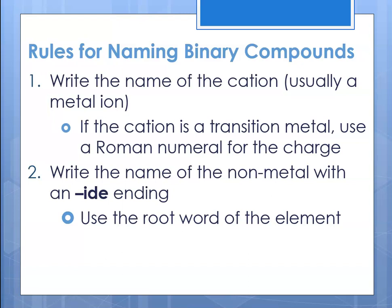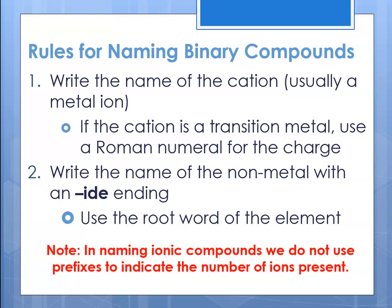So if the anion is oxygen, it would be 'oxide' — 'ox' for oxygen, '-ide' because it's binary. Note that in naming ionic compounds we do not use prefixes; that was the molecular naming convention. We are not assigning prefixes here.